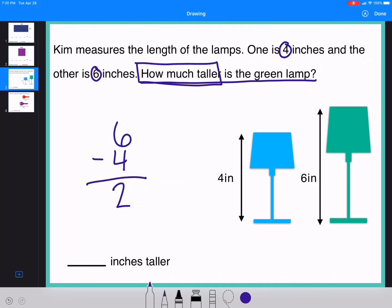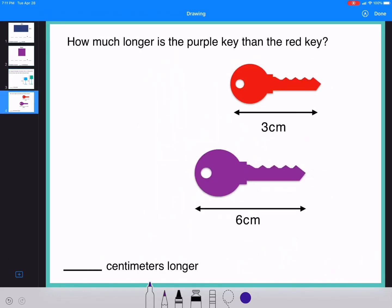So I'm going to set up my problem in my blank space here. So 6 minus 4 equals 2. Alright, now that we have our answer, we need to make sure that we write it with our words. So this one is 2 inches taller. How much longer is the purple key than the red key? Here's our important words again. How much longer?